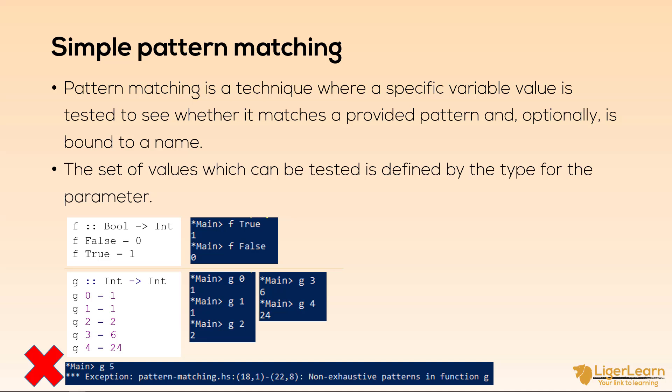We get an exception stating that g has non-exhaustive patterns. This means Haskell was unable to match g of 5 to any patterns which we have defined. If you noticed, g is just defining specific cases of the factorial function which we have been using as an example on previous slides.